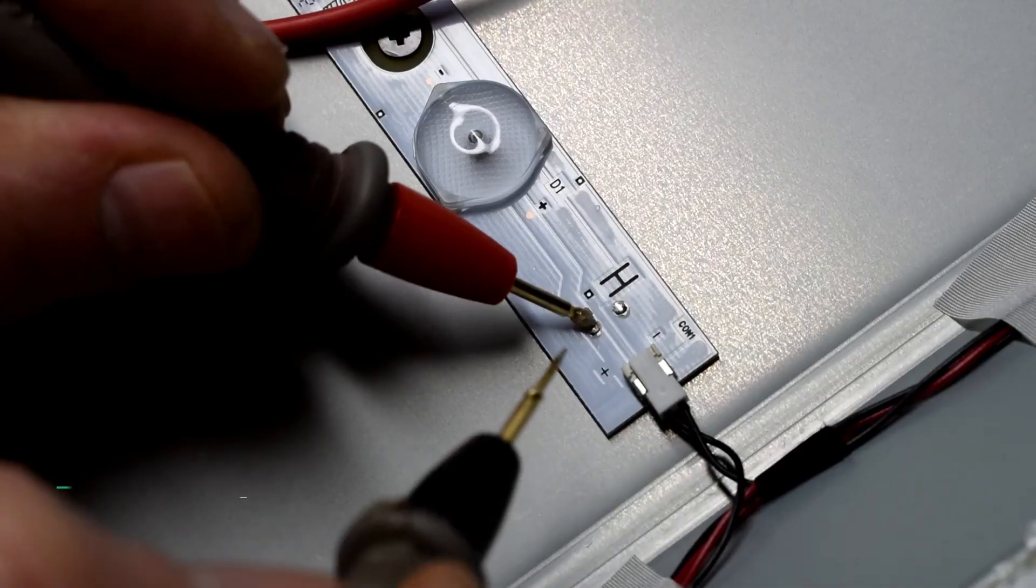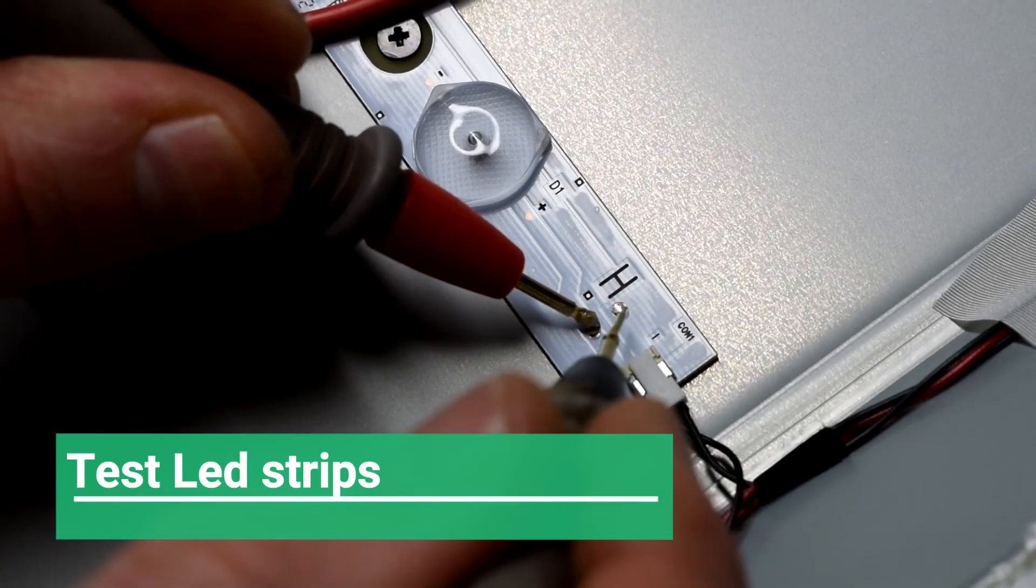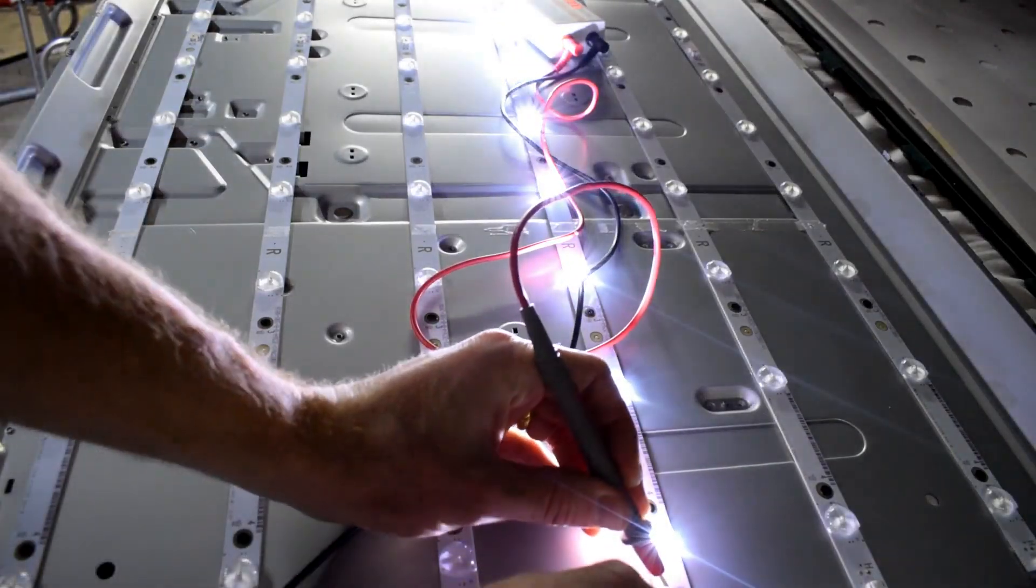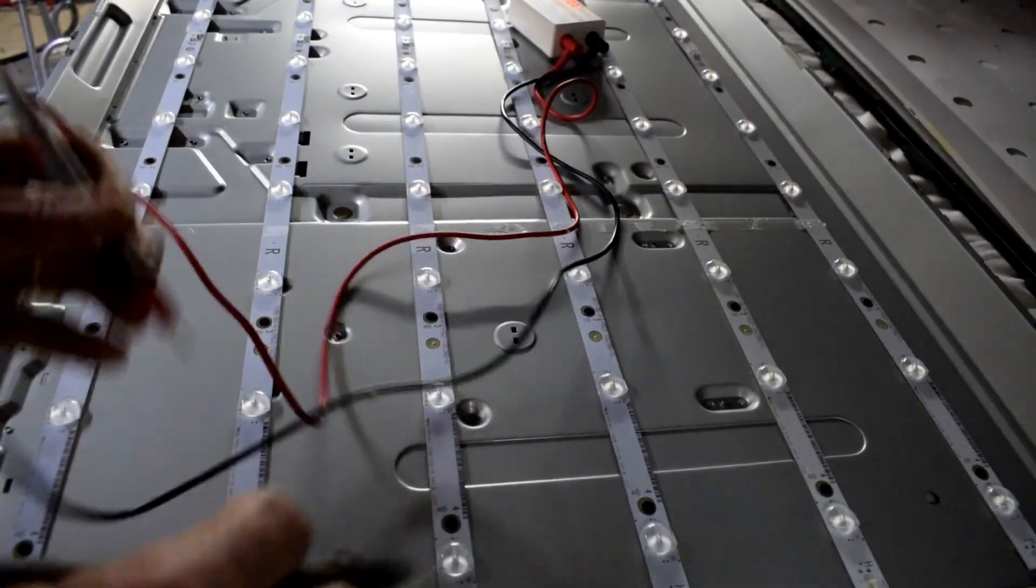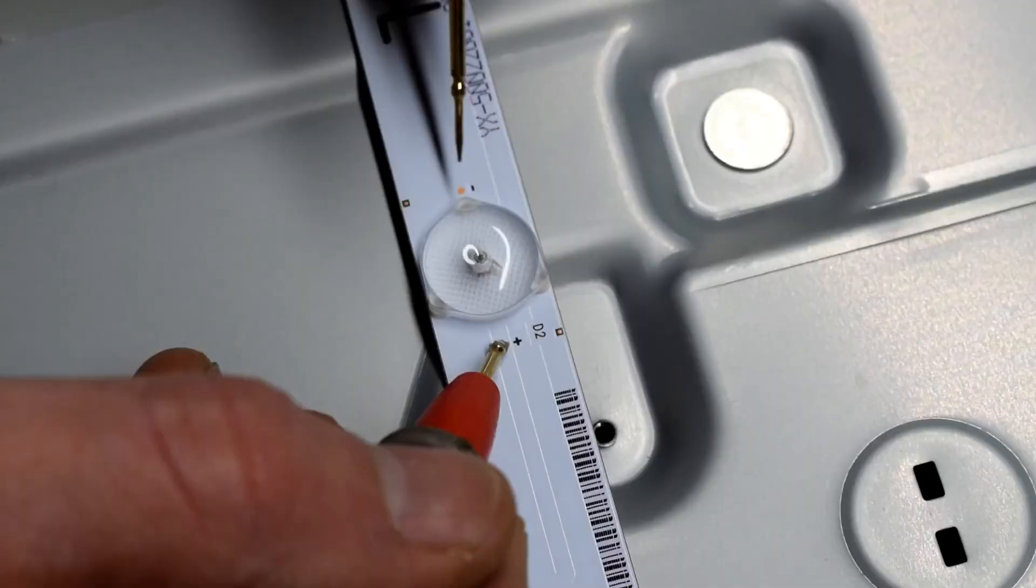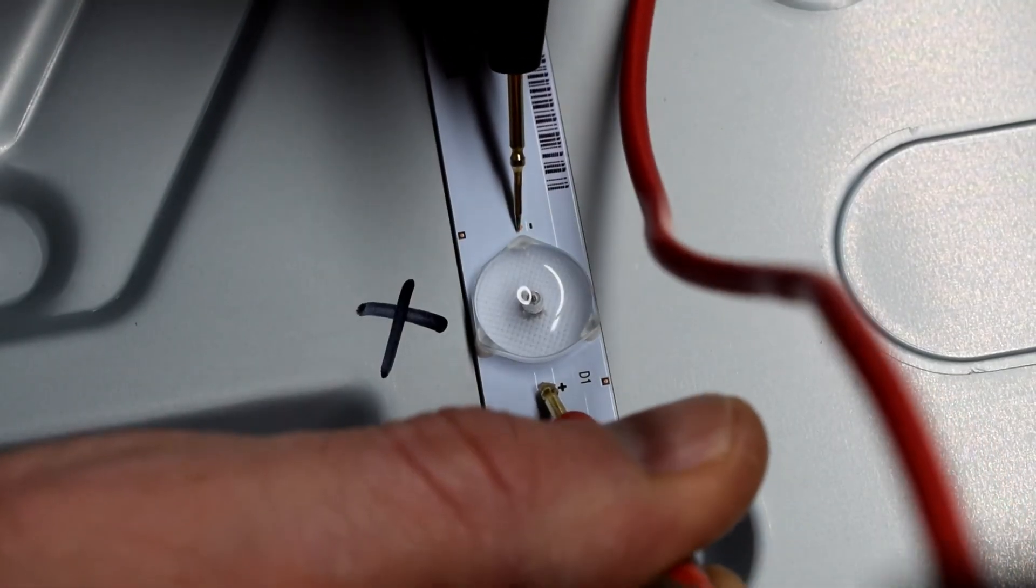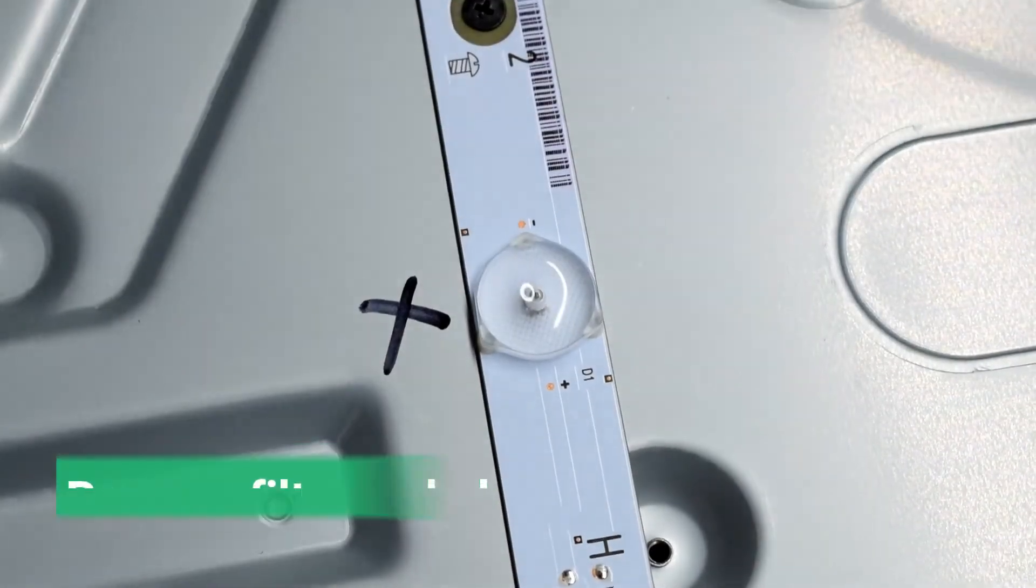Now we have access to all our LEDs. We're going to test each strip to verify which ones work and which ones don't. That's working. There's a row that doesn't work. Now you're going to go down that row and find which LEDs are bad on that row.